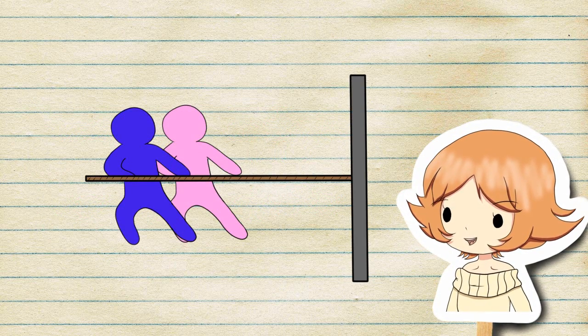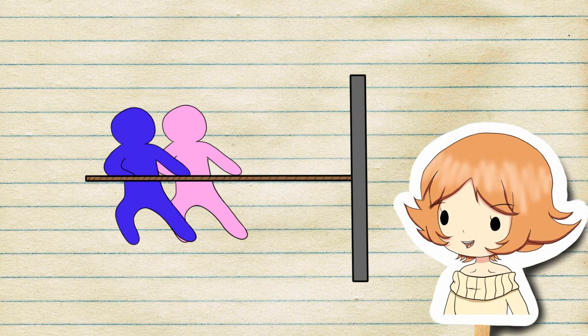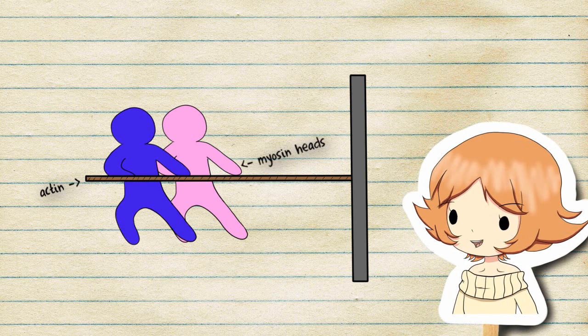Think of people playing tug-of-war against a springed wall. The people's hands are the myosin heads. The rope is the actin and the wall is the Z-line.